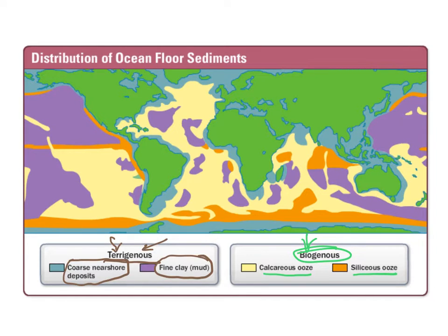The third type of seafloor sediment is what we call hydrogenous, and that comes from the water. This is where we see things like manganese nodules that form, which you'll learn about a little bit in our lesson. These are precipitates that come straight from the water — material that's trapped in the water and precipitates outwards. It comes from the water, hence the term hydrogenous.